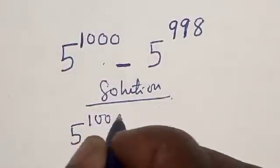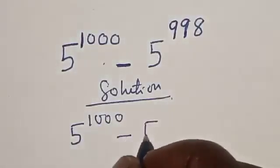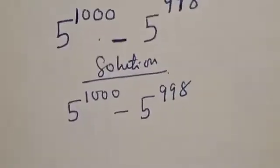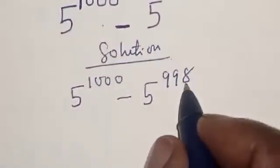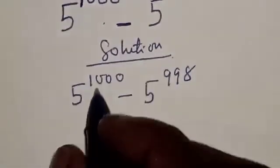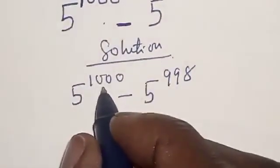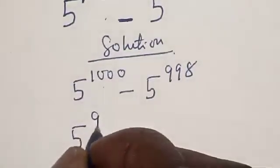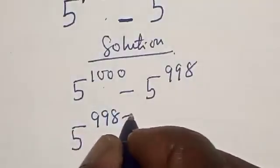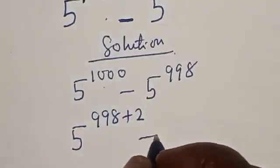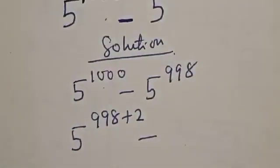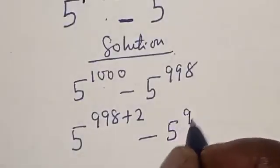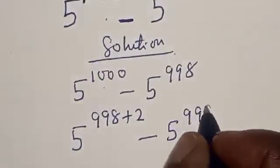Solution. We have the given question: 5 raised to power 1000 minus 5 raised to power 998. 5 raised to power 1000 can be expressed as 5 raised to power 998 plus 2, minus 5 raised to power 998.